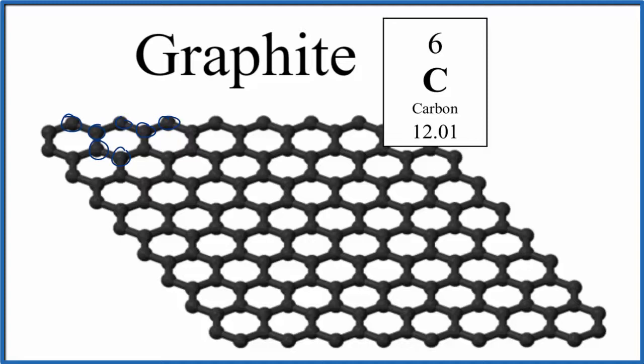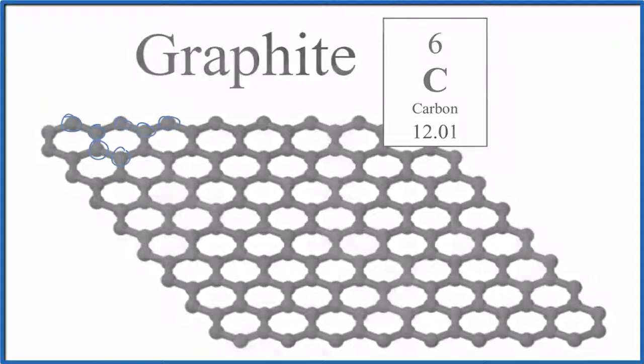So in answer to our question, we can say that graphite is made up of nonmetals and that it's a covalent or molecular compound. This is Dr. B, thanks for watching.